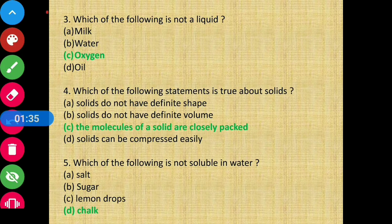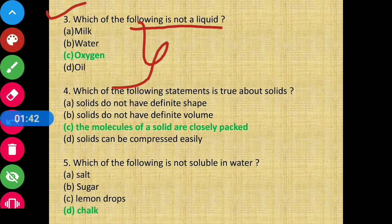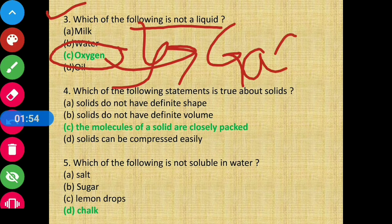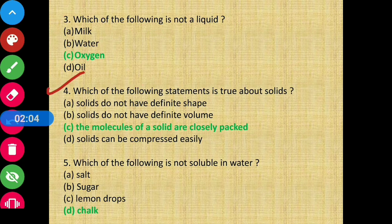Question number 3 - which of the following is not a liquid? इनमें से कौन सी चीज़ liquid state में नहीं कहलाएगी? The answer will be option C, that is oxygen, क्योंकि oxygen एक gas है। बाकी सब जैसे milk, water, और oil सभी liquid हैं।